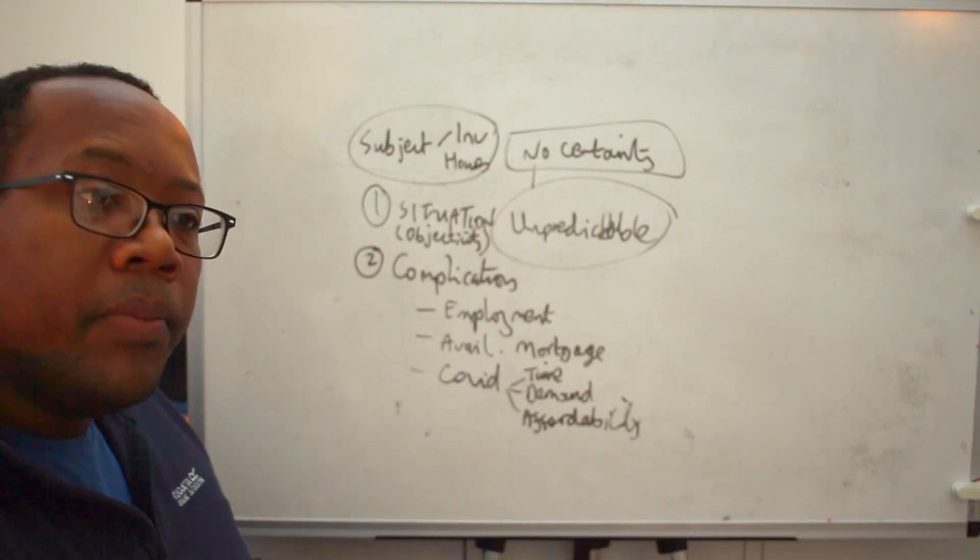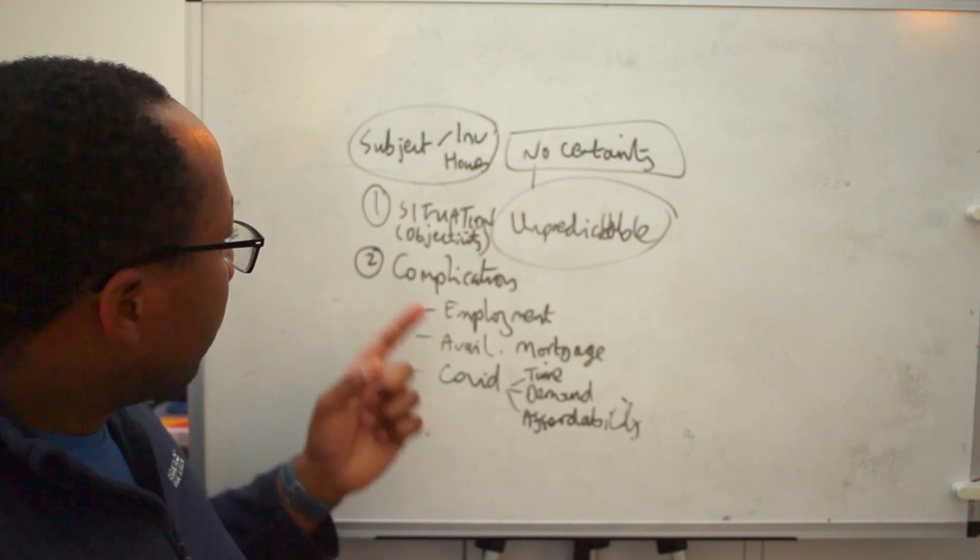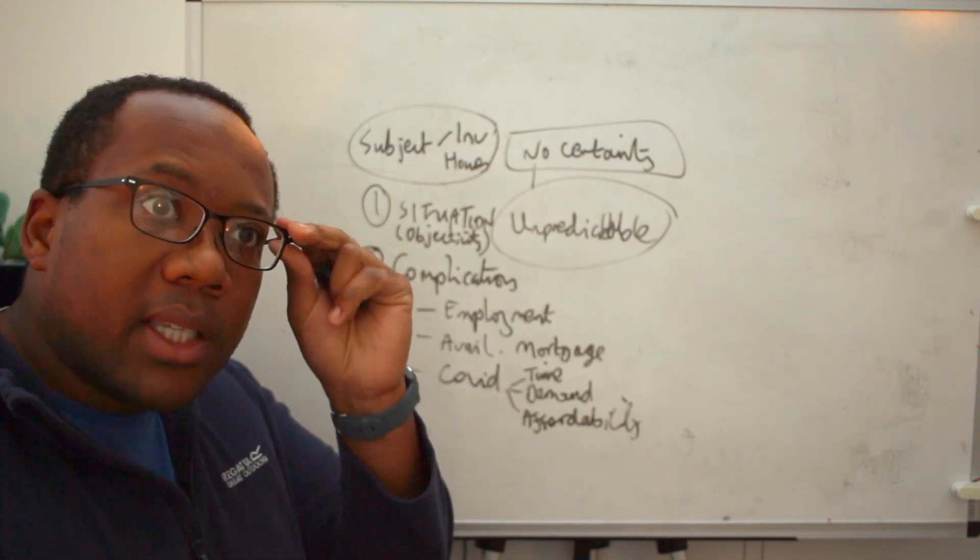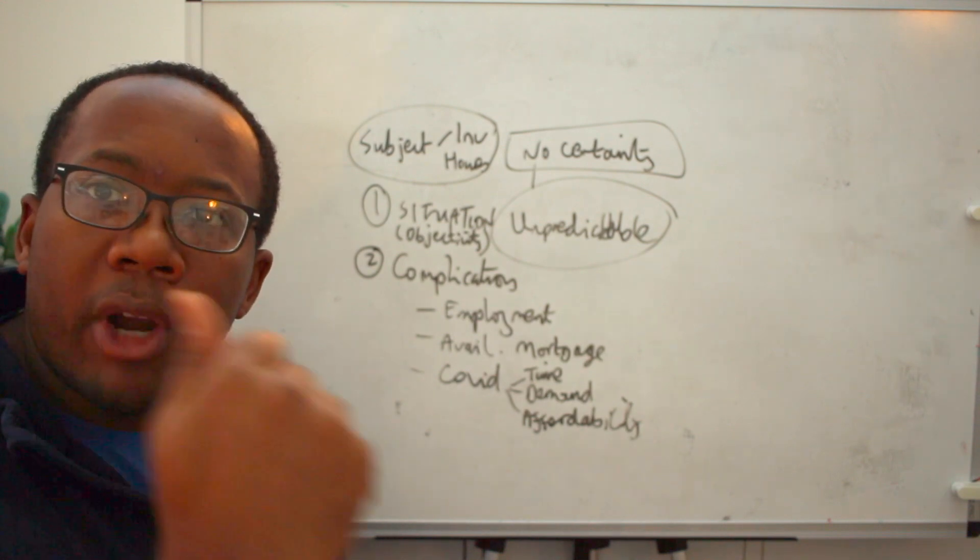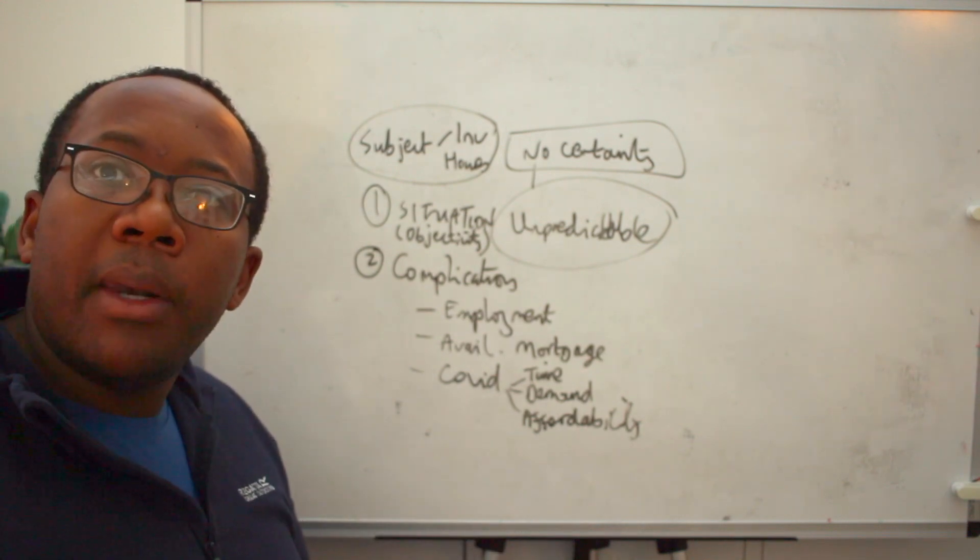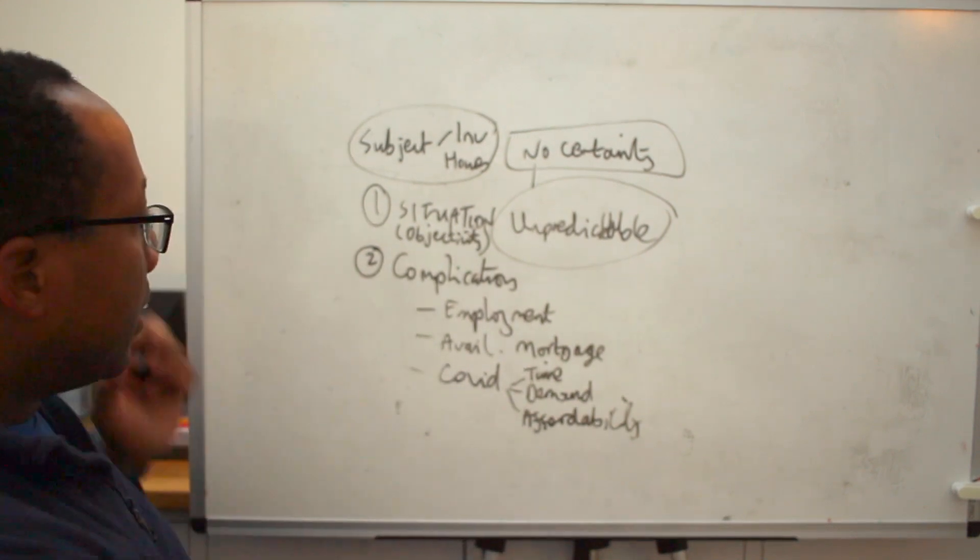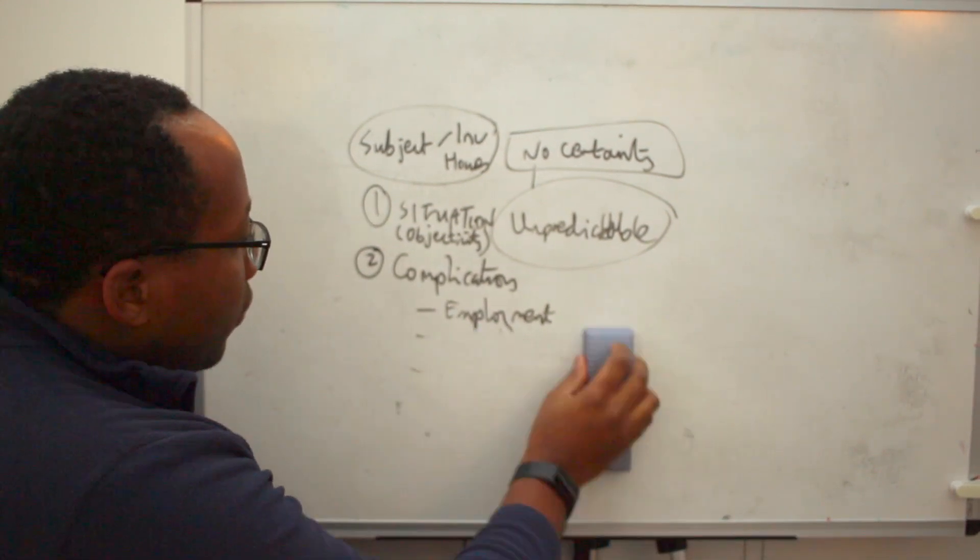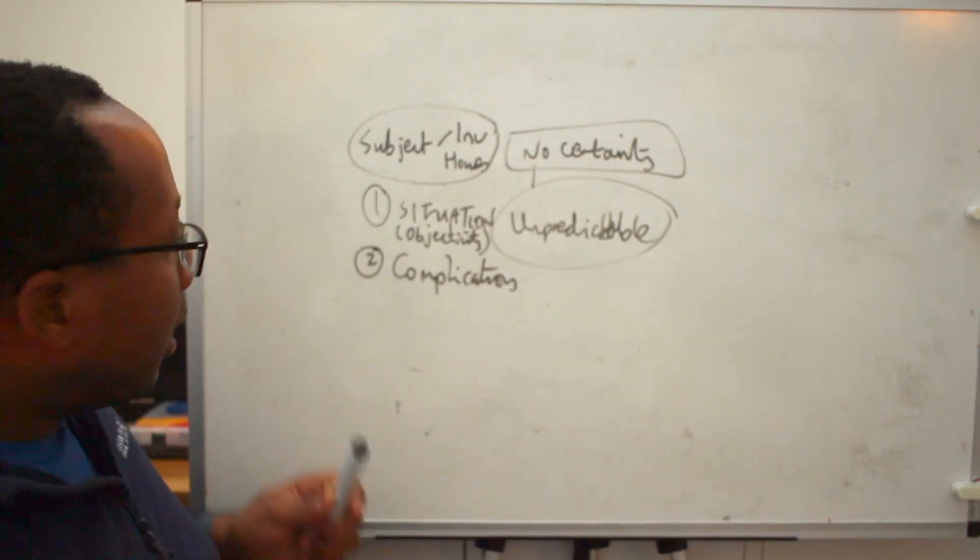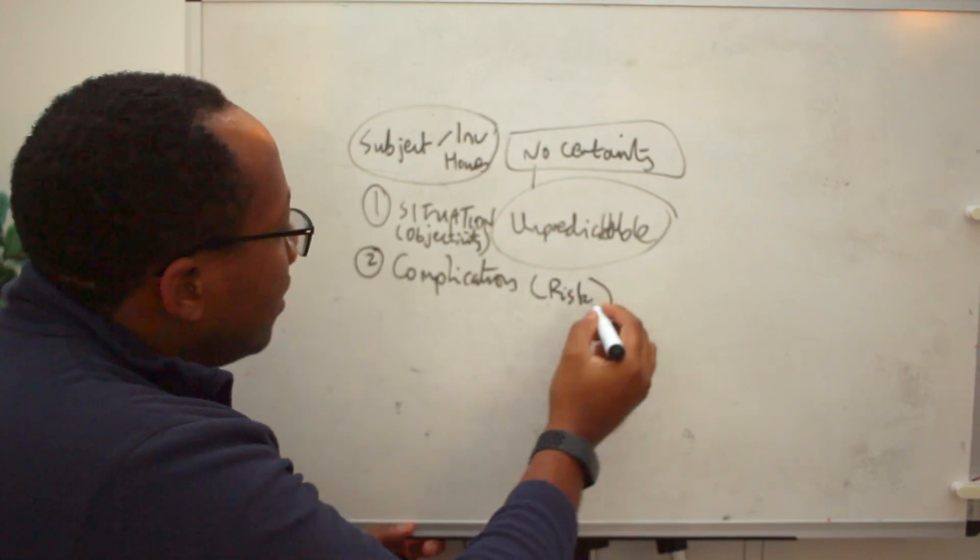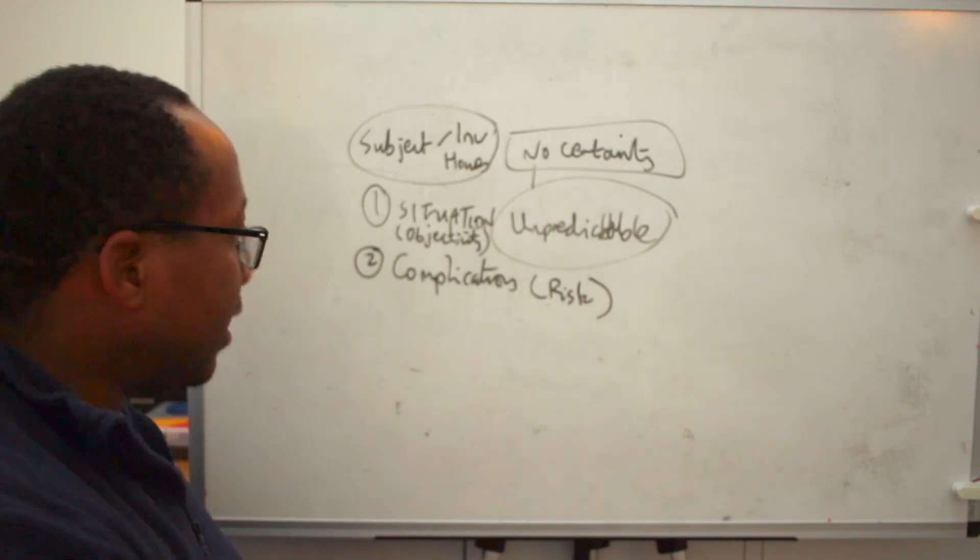So you can see here, guys, when we've got complex problems and we start looking at the nature of complications, we start to get a more rounded view of our risk. And when you're solving complex problems, you always want to understand your risk as best you can. So we're going to run through here and our complications are going to all be about risk.